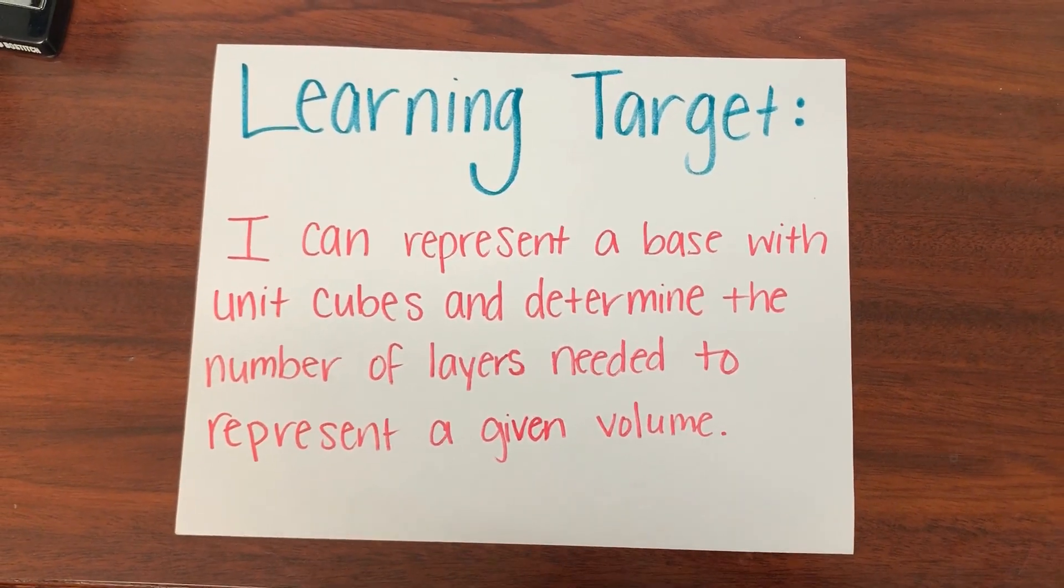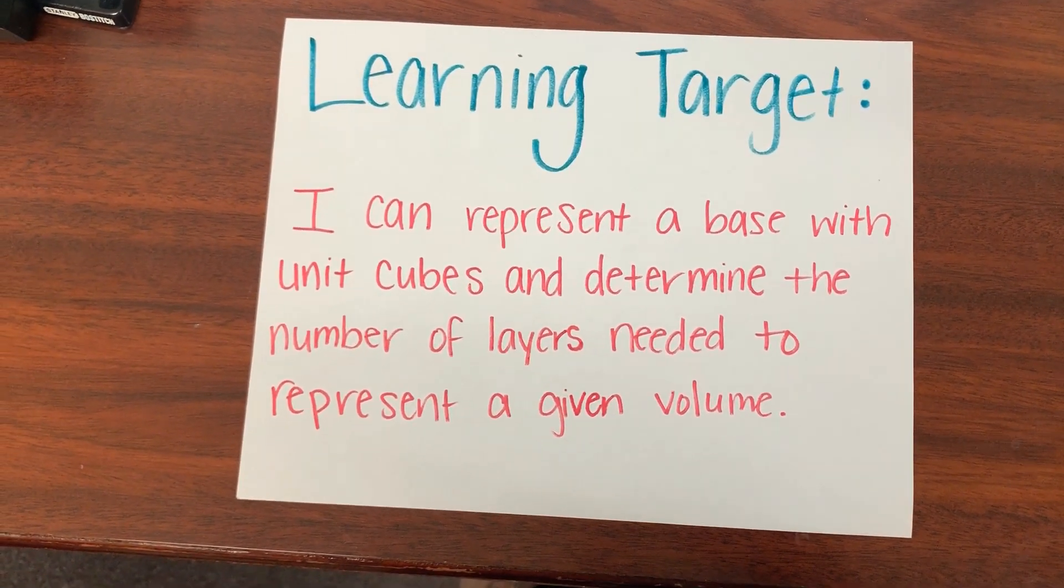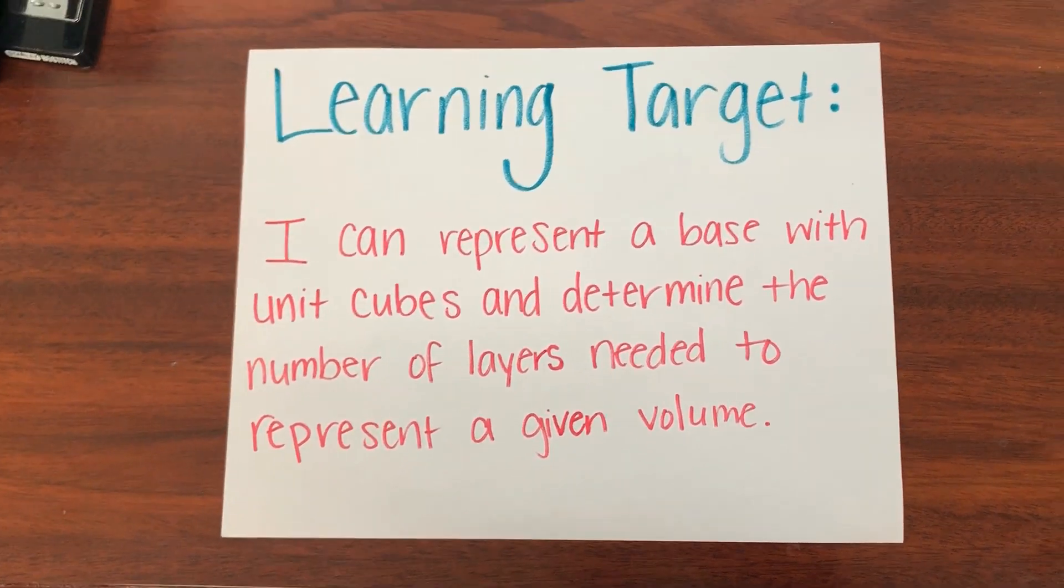We're really going to focus on that word base and layers, kind of breaking down that rectangular prism, counting how many unit cubes make up the base, and how many layers does it take to create the height of that prism, and how do we use all that to figure out its total volume.